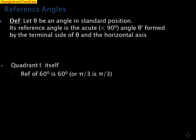In this video we're going to talk about reference angles. The quick definition: let theta be an angle in standard position. The reference angle is the acute angle — and this is pretty important — your reference angle is always going to be an acute angle, less than 90 degrees, formed by the terminal side of theta and the horizontal axis.